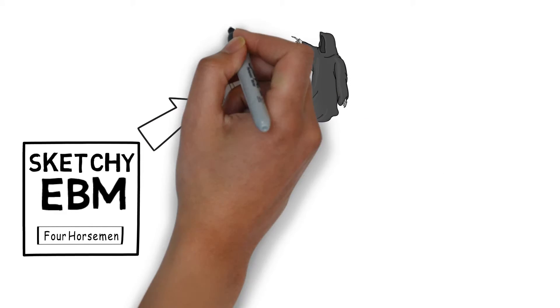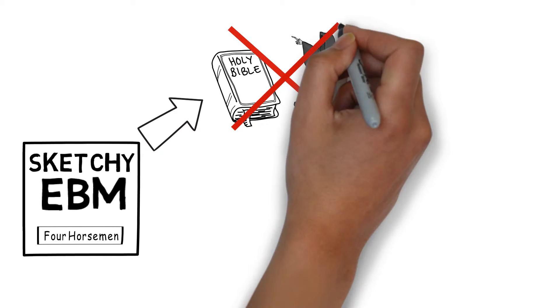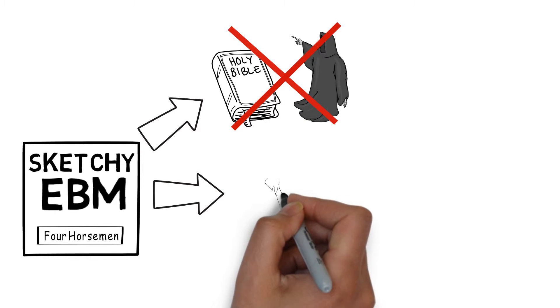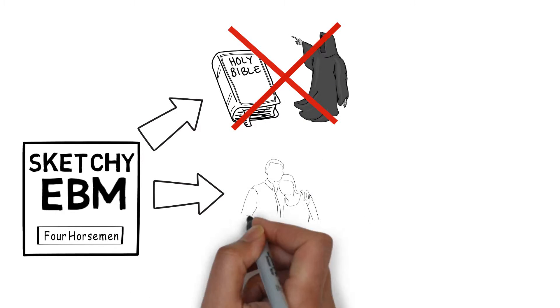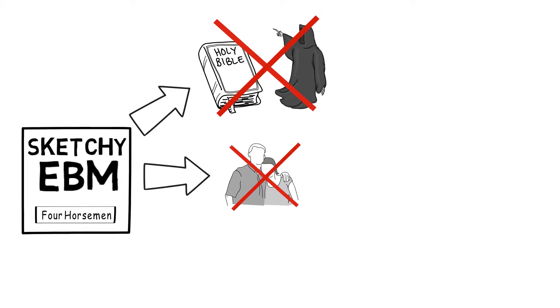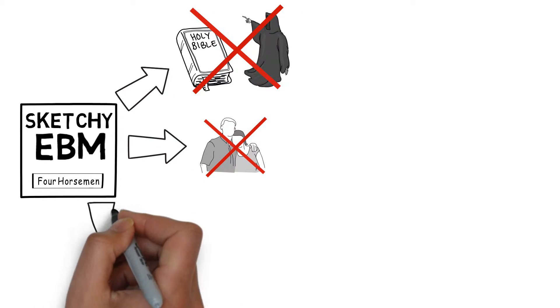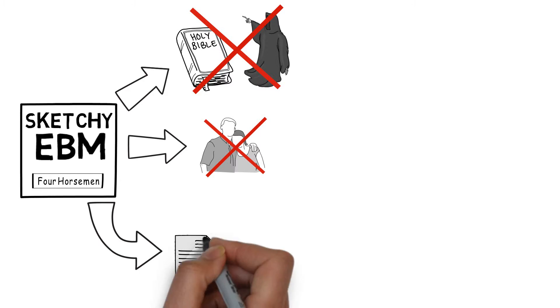Let me reassure you from the beginning that this is not a religious or biblical discussion. In addition, we are not discussing the Four Horsemen of Relationships, which Gottman accurately describes. What we are going to talk about are the Four Horsemen as they pertain to discharge instructions.